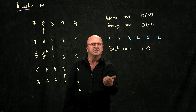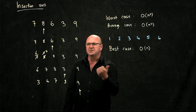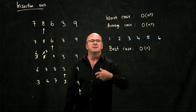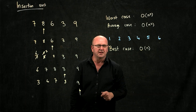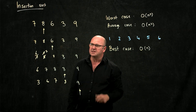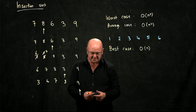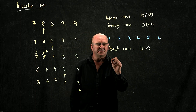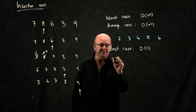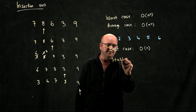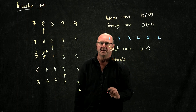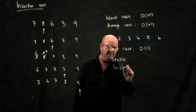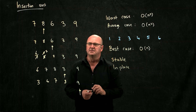So the insertion sort is typically used if you have an already sorted list, for example in a database. You keep all the keys already sorted, and as you add a new key to the database, you quickly do an insertion sort. It keeps things sorted. The insertion sort is stable, and the insertion sort is in place.